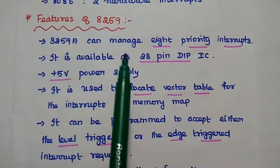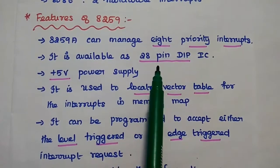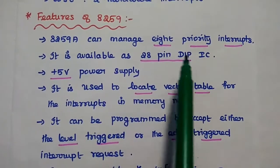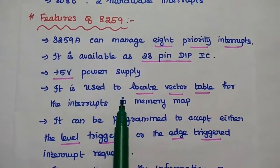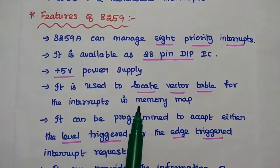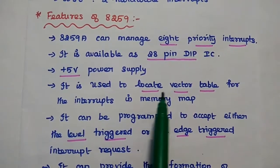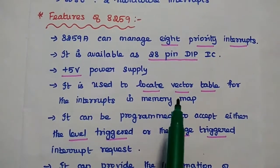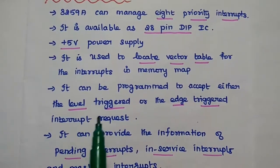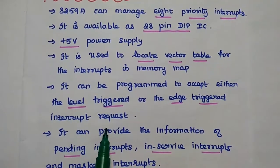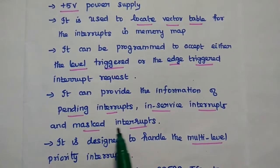The 8259A can manage 8 priority interrupts. It is available as a 28-pin dual inline package IC. It requires a +5 volt power supply for its operation. It is used to locate the vector table for the interrupts in the memory location — that means the address for each interrupt in the memory map. It can be programmed to accept either level-triggered or edge-triggered interrupt requests. It can provide information of pending interrupts, in-service interrupts, and masked interrupts.